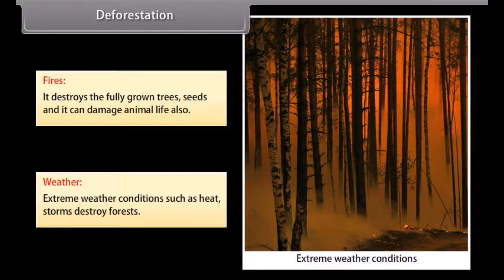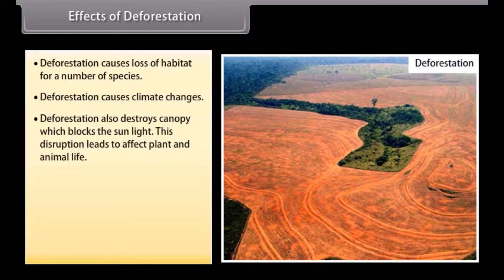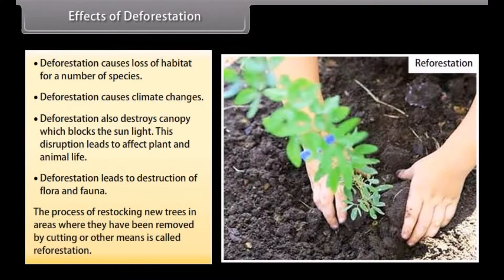Extreme weather conditions such as heat and storms also destroy forests. Effects of deforestation include loss of habitat for a number of species, climate changes, and destruction of the forest canopy which blocks sunlight. This disruption affects plant and animal life and leads to destruction of flora and fauna. The process of restocking new trees in areas where they have been removed is called reforestation.